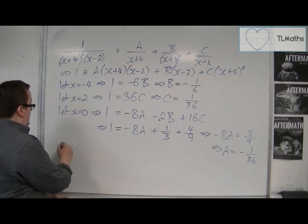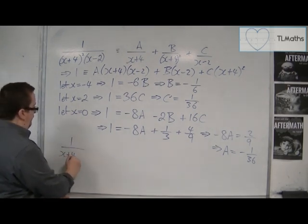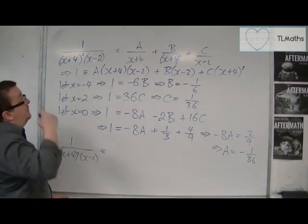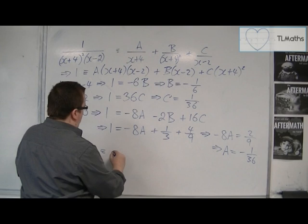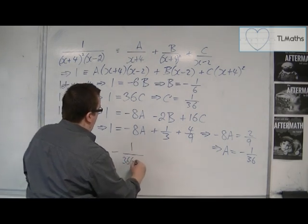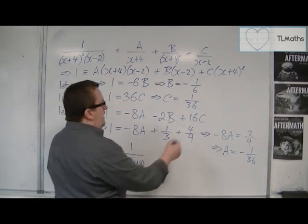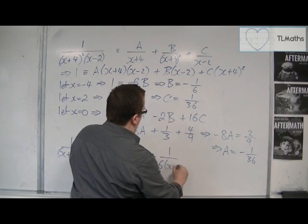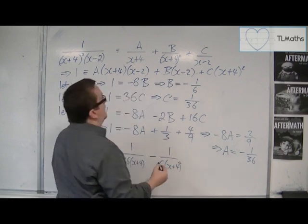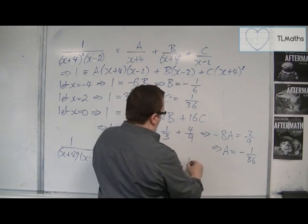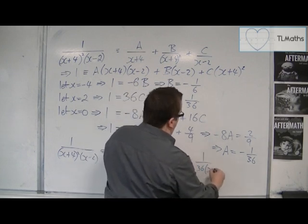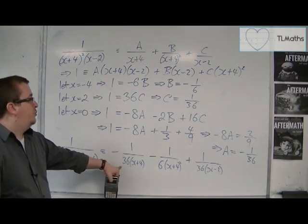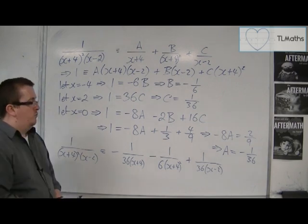And so we can write 1 over x plus 4 squared, x minus 2, as minus 1 over 36, so minus 1 over 36, x plus 4. Plus b, which is minus a sixth, so minus 1 over 6 lots of x plus 4 squared. Plus c, so 1 over 36, so 1 over 36, x minus 2. And that, these are the partial fractions of this original problem.